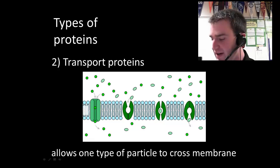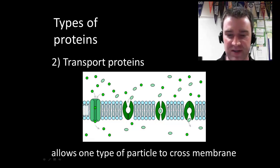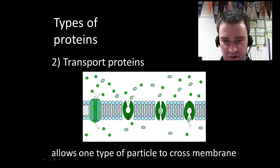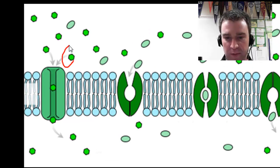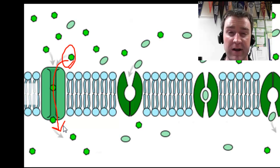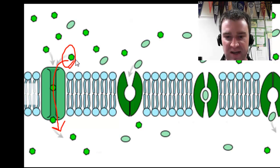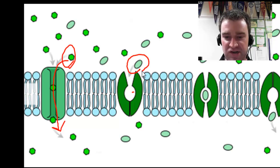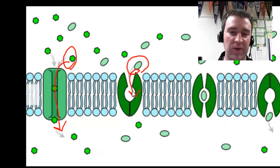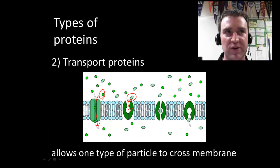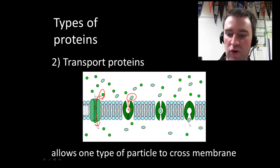A second class of proteins we'll talk about next unit are called transport proteins. These are proteins with particular shapes to allow particular particles to cross through them across the membrane — transport proteins exist in membranes. This particular protein takes a green hexagon particle and allows it to cross, whereas another transport protein has a different shape because it allows a blue oval particle to cross through it. Different proteins allow different particles to cross.